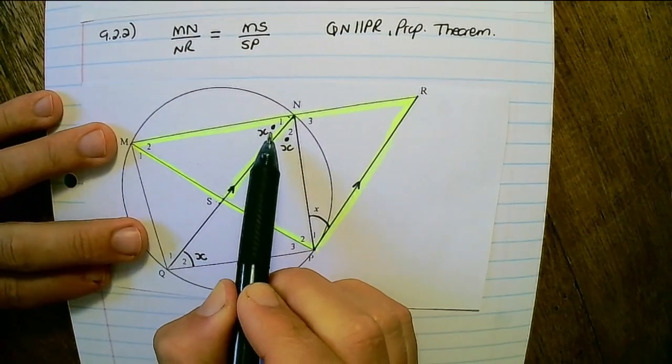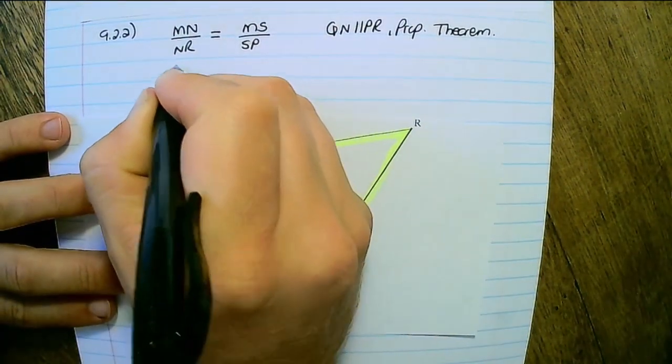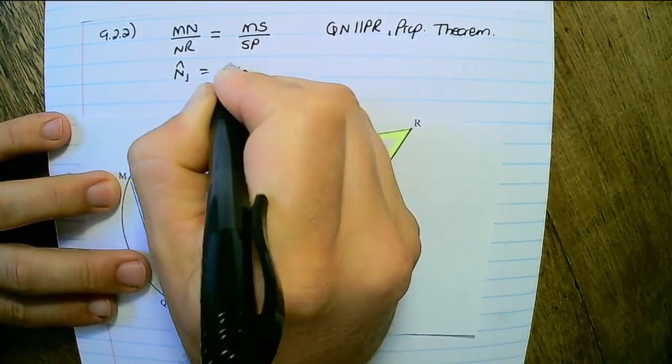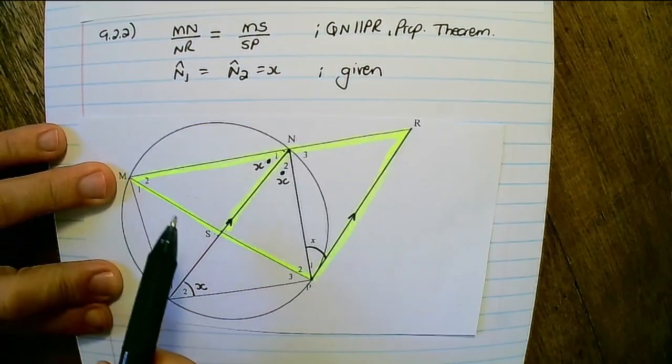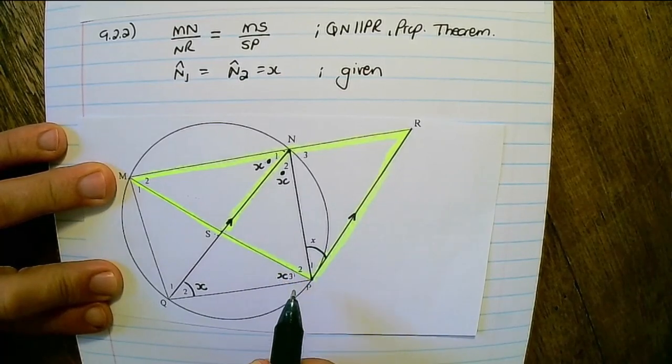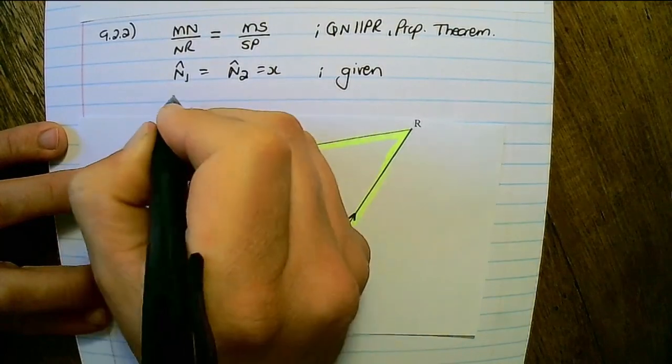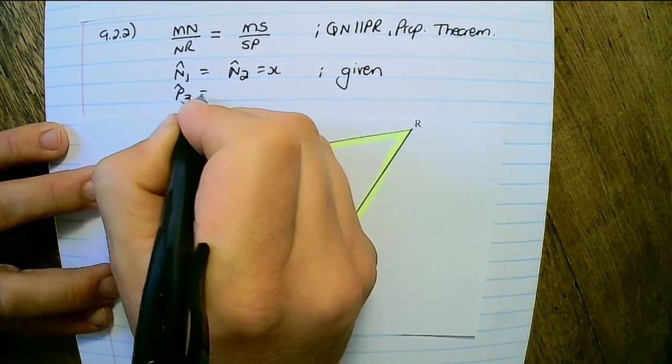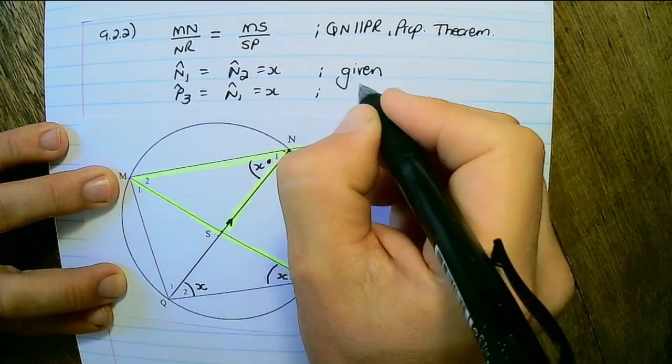Then we have angle N1 is equal to N2. N1 is equal to N2 equals to X and this was given. That would mean that angle P3 is also equals to X. Because it will be equal to angle N1. So P3 would be equal to angle N1 equals to X. Angles in the same segment.